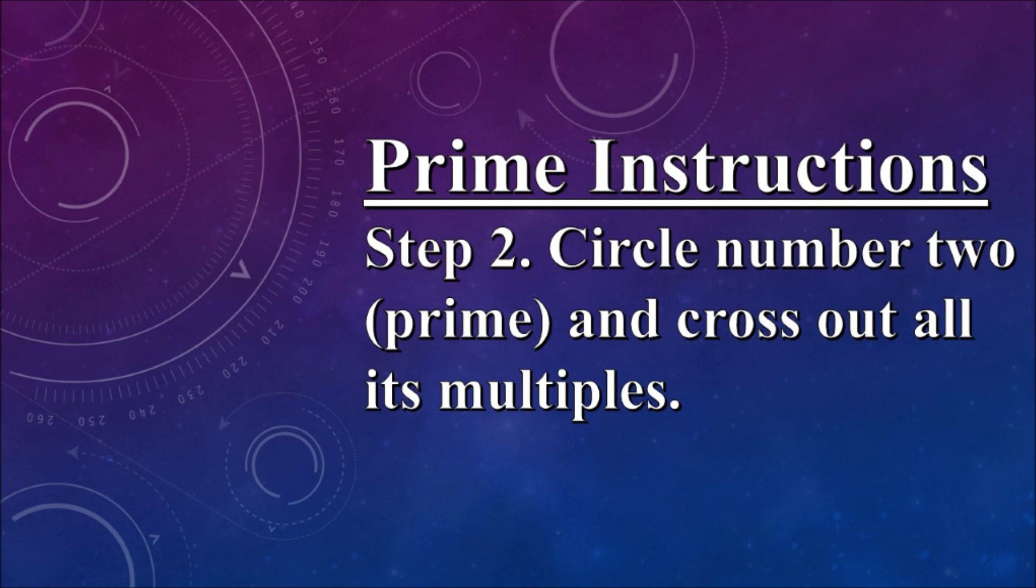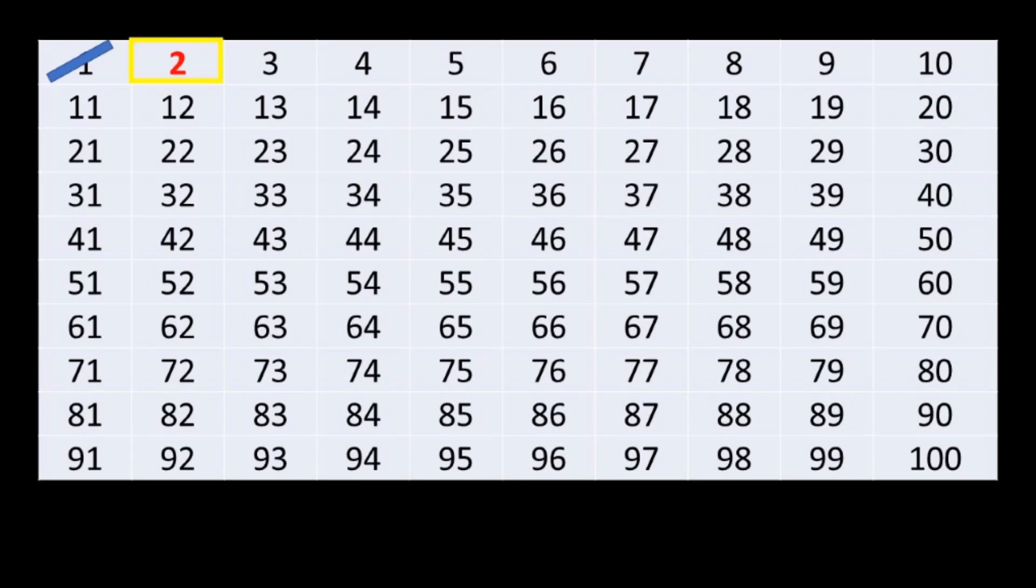Step 2, circle the number 2, it is a prime number, and cross out its multiples. Again, circle the number 2 and cross out all its multiples.